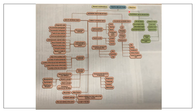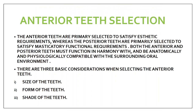The next is posterior teeth selection. For posterior teeth, you consider the size and the form. Since posterior teeth mainly perform the function of mastication, the color of posterior teeth is not as important as it is for anterior teeth. Anterior teeth are primarily selected to satisfy the aesthetic requirement, whereas posterior teeth are used for the masticatory functional requirement.